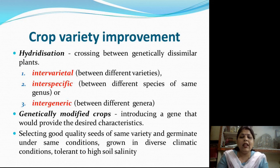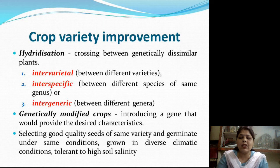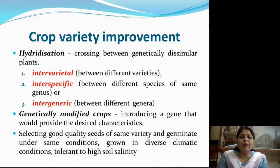We also need to select the best quality seeds of the same variety so that they can germinate under the same conditions. They should be capable of being grown in diverse climatic conditions, tolerant to high soil salinity, and selected for high yields. They should also be resistant to diseases and able to grow in drought conditions.